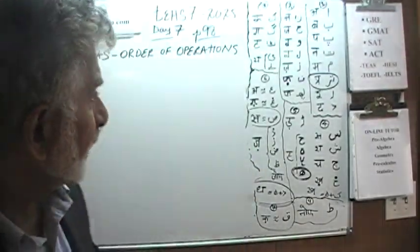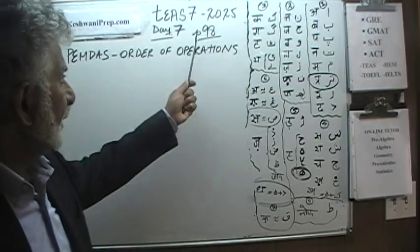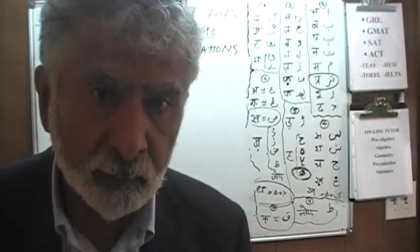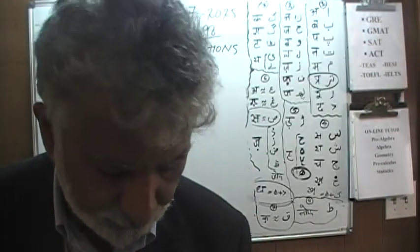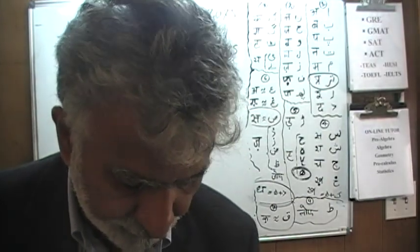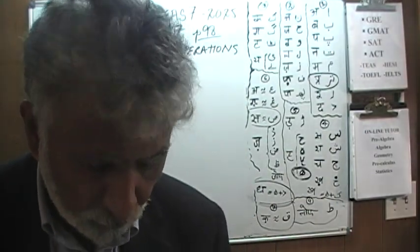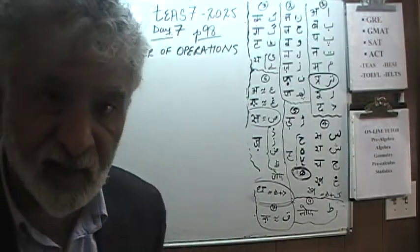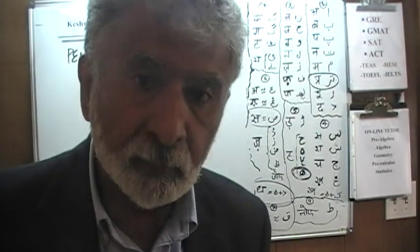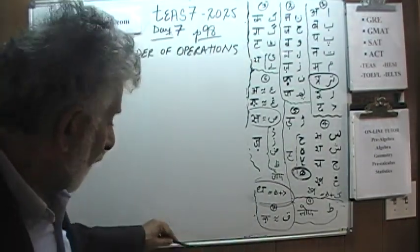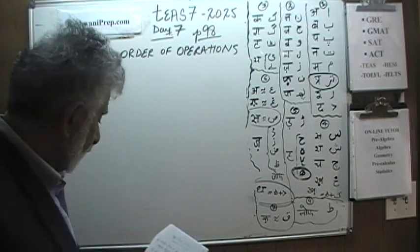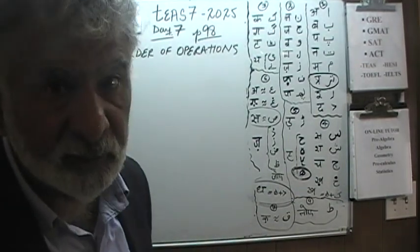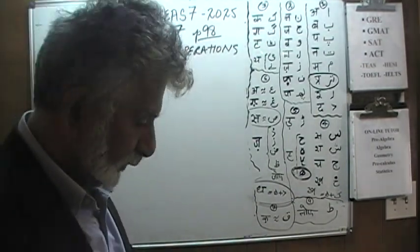Today is our lesson number 7. We are on page number 98. On page 98, we did the two problems on the top yesterday — example number 8 and 9. Today, we will do the practice problems. There are five of them. We are going to do only problem number 1 today out of 5, because problem number 5 has several parts to it: A, B, C, D, and so on.